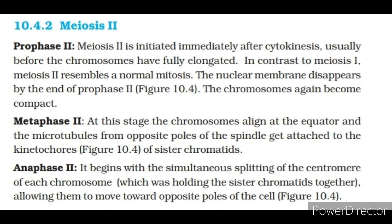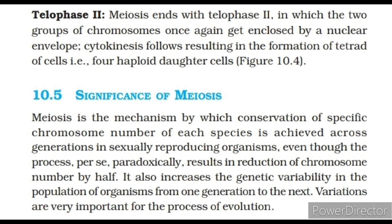Meiosis II is initiated immediately after cytokinesis, usually before the chromosomes have fully elongated. In contrast to meiosis I, meiosis II resembles a normal mitosis. The nuclear membrane disappears by the end of prophase II and the chromosomes again become compact. Metaphase II: the chromosomes align at the equator and the microtubules from opposite poles of the spindle get attached to the kinetochores of sister chromatids. Anaphase II begins with the simultaneous splitting of the centromere of each chromosome, which was holding the sister chromatids together, allowing them to move toward opposite poles of the cell. Telophase II: meiosis ends with the two groups of chromosomes once again getting enclosed by a nuclear envelope. Cytokinesis follows, resulting in the formation of a tetrad of cells, i.e., four haploid daughter cells.